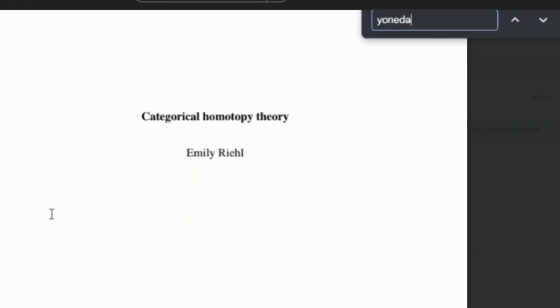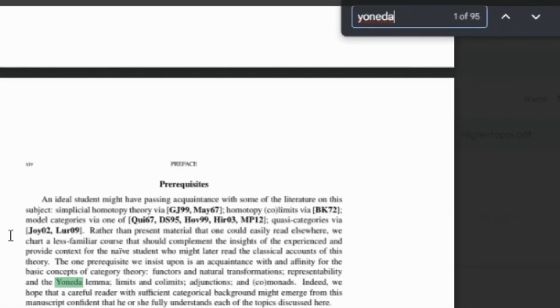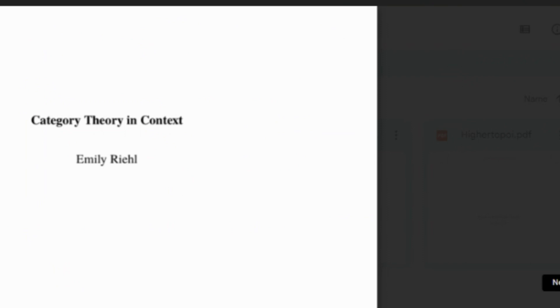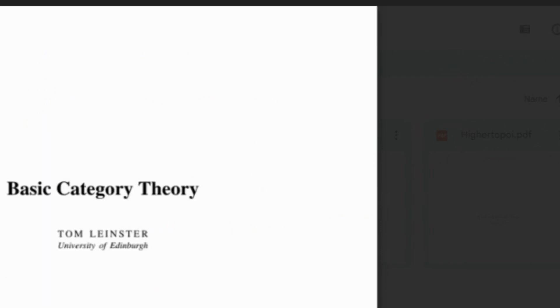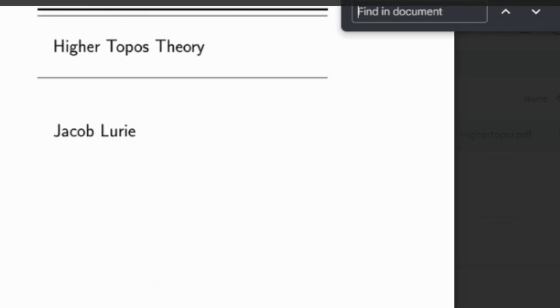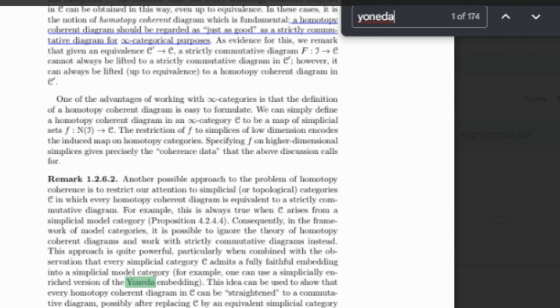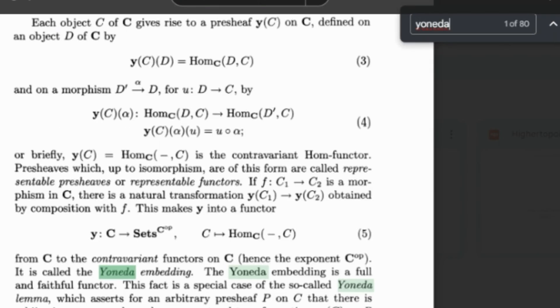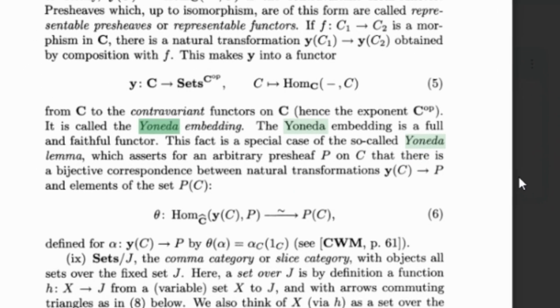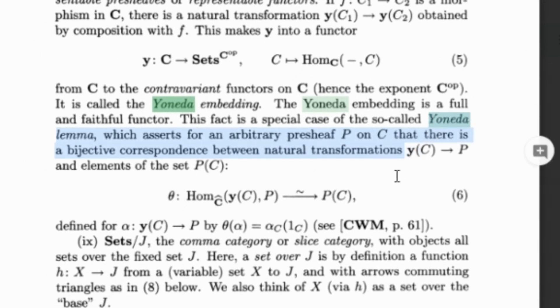The Yoneda Lemma is the most important result in category theory. Fundamental categorical techniques very often rely on the Yoneda mechanism. I would be a rich man if I were paid every time I implicitly use it. So what is it about?